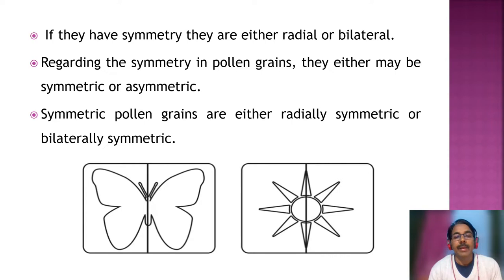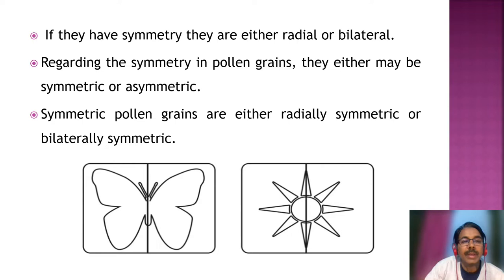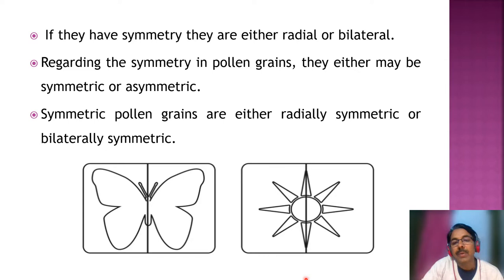If there is symmetry, it may be either radial or bilateral symmetry. Regarding pollen grains, they may be symmetric or asymmetric. The pollen grains which are symmetric may have radial symmetry or bilateral symmetry. In a radial symmetry diagram, it looks like a sun and you can draw lines from many planes of division — it has many planes of division.